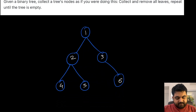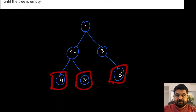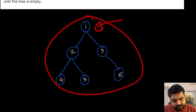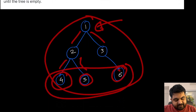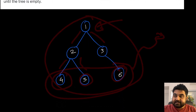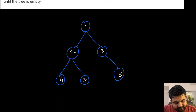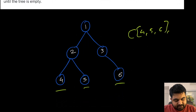A leaf node is a node that does not have any children. For any given binary tree, given the root, we need to iterate over the entire tree, find all the current leaves, collect every single leaf in one round, and then repeat the same process with the remaining nodes. At the beginning, nodes four, five, and six are the leaf nodes, so we collect them as the first set.